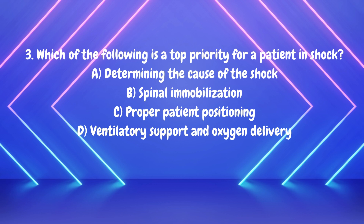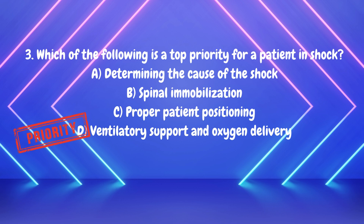Number three: which of the following is a top priority for a patient in shock? Determining the cause, spinal immobilization, proper patient positioning, or ventilatory support and oxygen delivery. You need to determine the cause to treat shock, but it's not the top priority. Spinal immobilization doesn't take precedence over airway, breathing, and circulation. The answer is ventilatory support and oxygen delivery — no matter what type of shock, the patient isn't getting enough oxygen to the tissue.